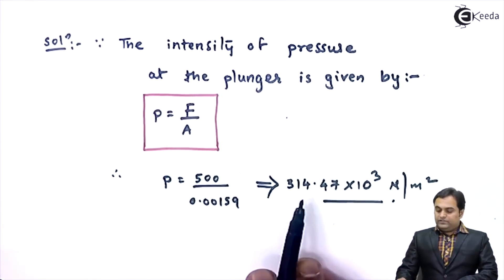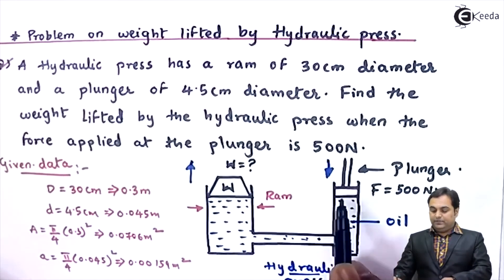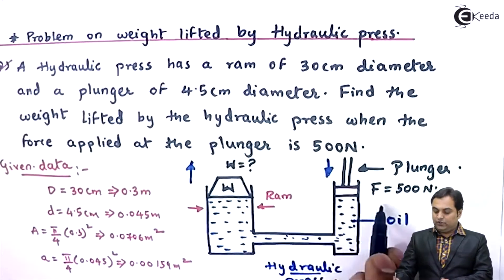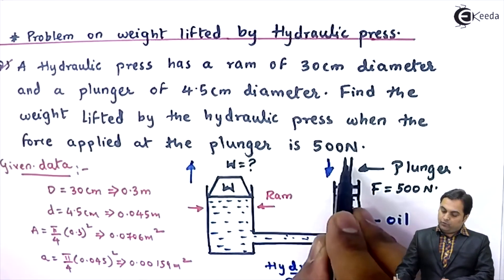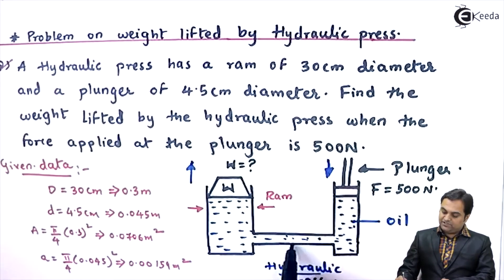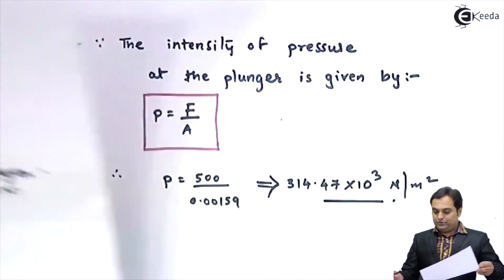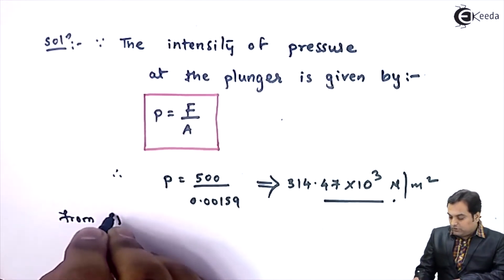Now this intensity of pressure which is there at the plunger, the pressure will remain same in all directions. That is along x, along y, and along z directions. So whatever pressure is there at the plunger end, same pressure will go into the ramp because of Pascal's law. So I'll say that from Pascal's law,